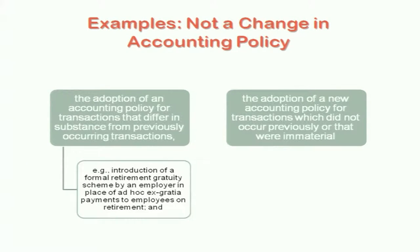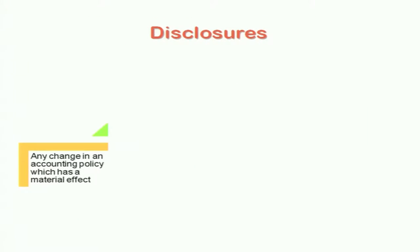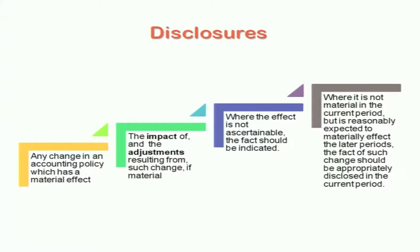Adoption of an accounting policy for transactions that differ in substance — where you have two different transactions each with their own policy — is not a change in accounting policy. If you adopt a new policy for a new transaction that was not previously in your books, that is also not a change in accounting policy. Any change in accounting policy which has a material impact requires a disclosure in your notes to accounts, giving the impact and the adjustments resulting from the change. Where the effect is not ascertainable, you have to disclose that you cannot ascertain the financial impact. Where it is not material currently but reasonably expected to affect future periods, you should give details of that future impact.